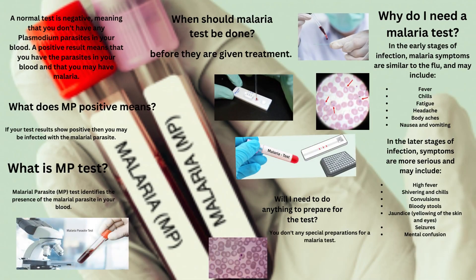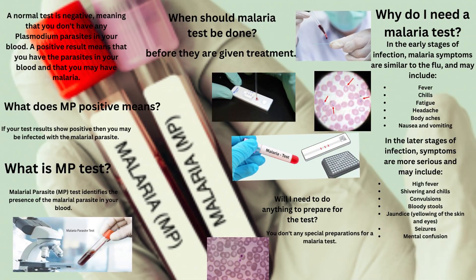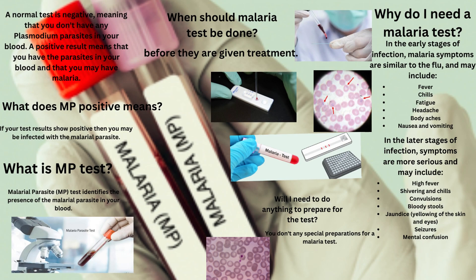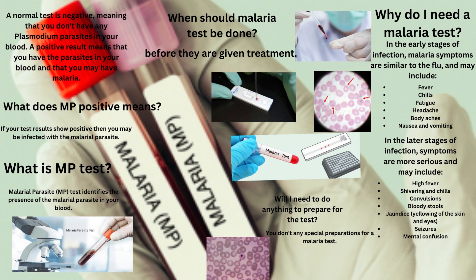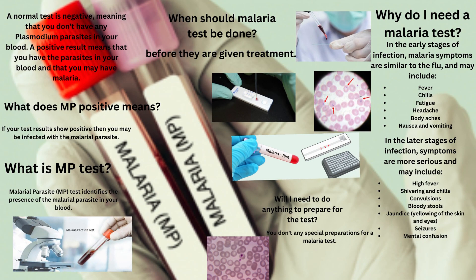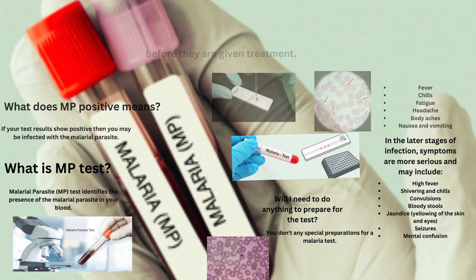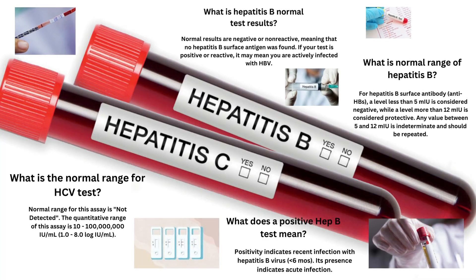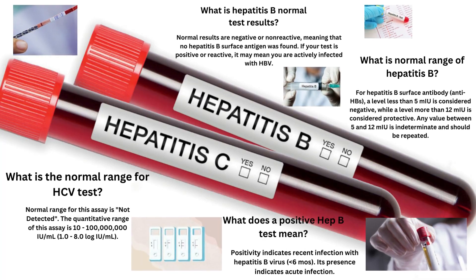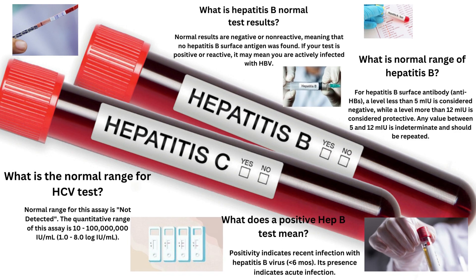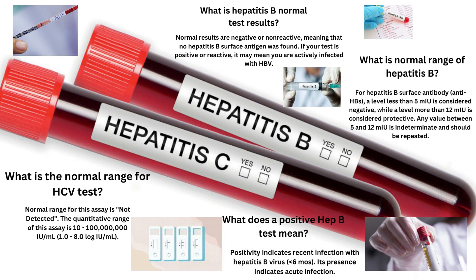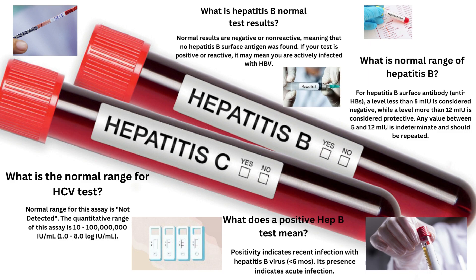Malaria Parasite Test. The malaria parasite test identifies the presence of the malaria parasite in your blood. If your test results show positive, then you may be infected with the malaria parasite. Hepatitis Virus Panel. The hepatitis virus panel is a series of blood tests used to detect current or past infection by hepatitis A, hepatitis B, or hepatitis C.